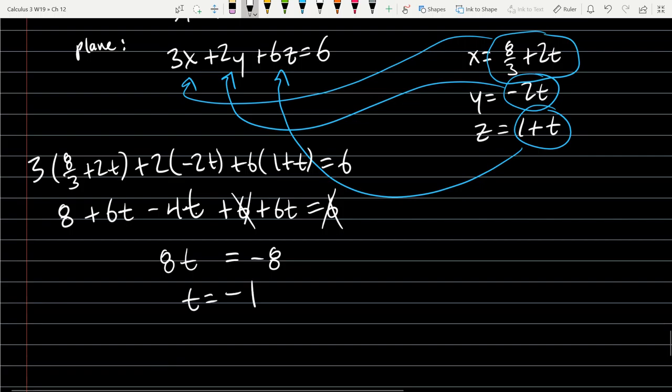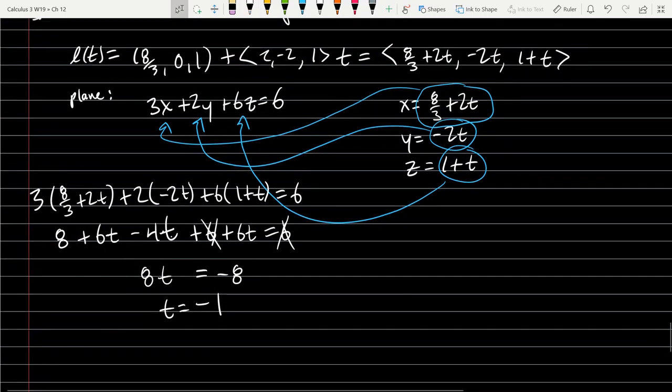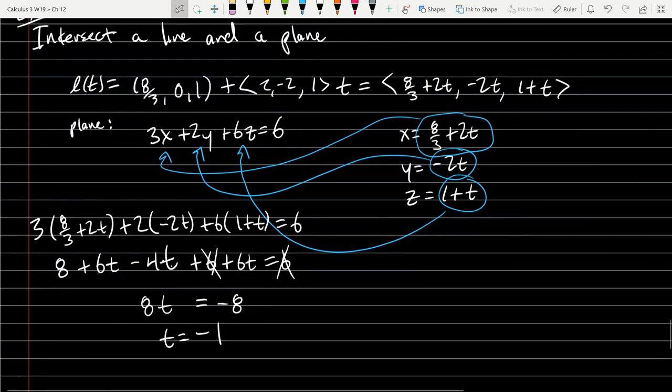t equals negative one is not the intersection. What that is, is the t value the line L has when it intersects the plane. So I have to turn this t value into a point, and we do so with the L(t) equation.